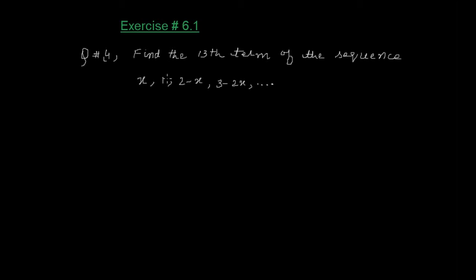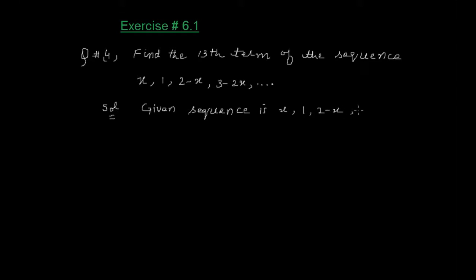हमें यह sequence given है और हमें इसकी 13th term find out करनी है। 13th term find out करने के लिए पहले A1 और D की जरूरत पड़ेगी, तो हम D find out कर लेते हैं। Given sequence is: X, 2 minus X, 3 minus 2X, up to 6.